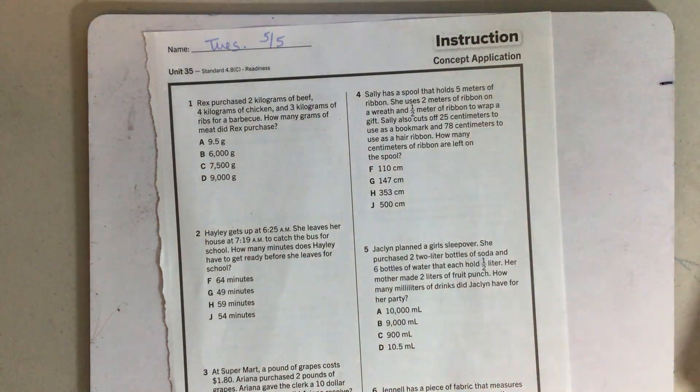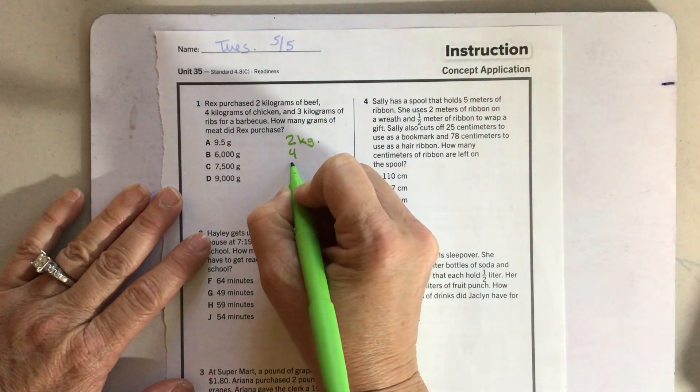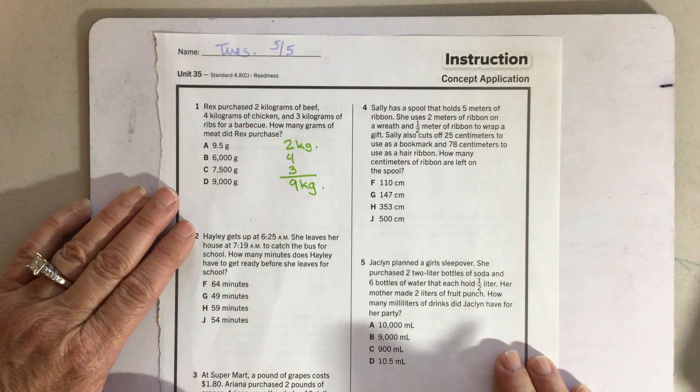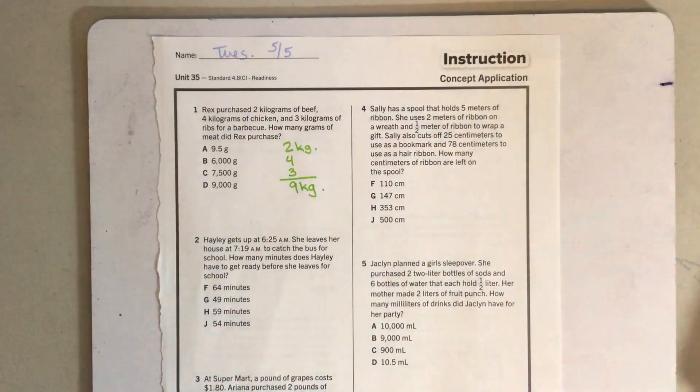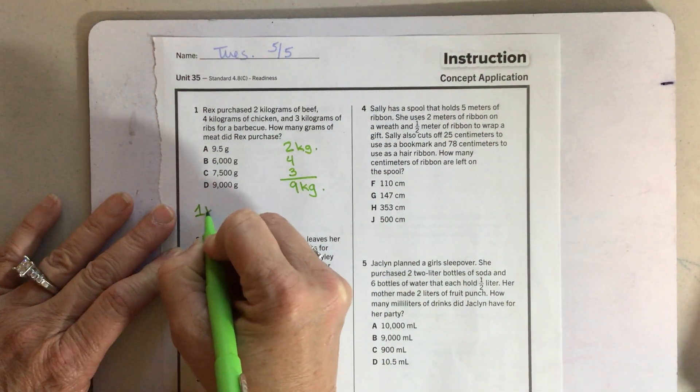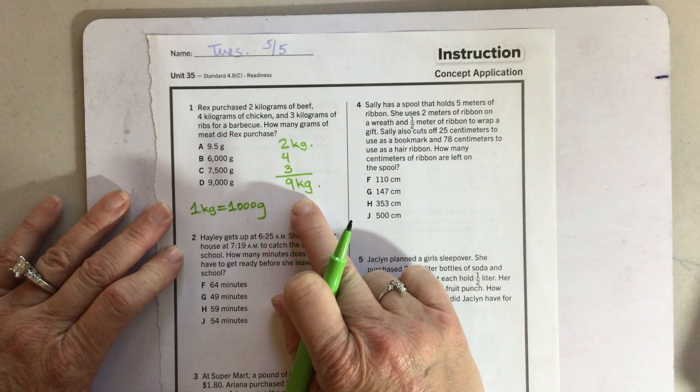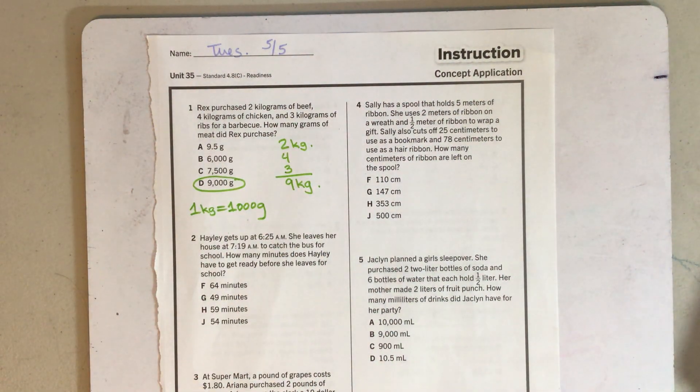One kilogram is a thousand grams. So one kilogram a thousand, two kilograms 2000, three kilograms 3000, so on and so forth. So we've got to figure out how many kilograms we have here. If there's two kilograms of beef, four of chicken and three of ribs, that's nine kilograms. But we have to convert these kilograms to grams. So that would be 9,000 grams.